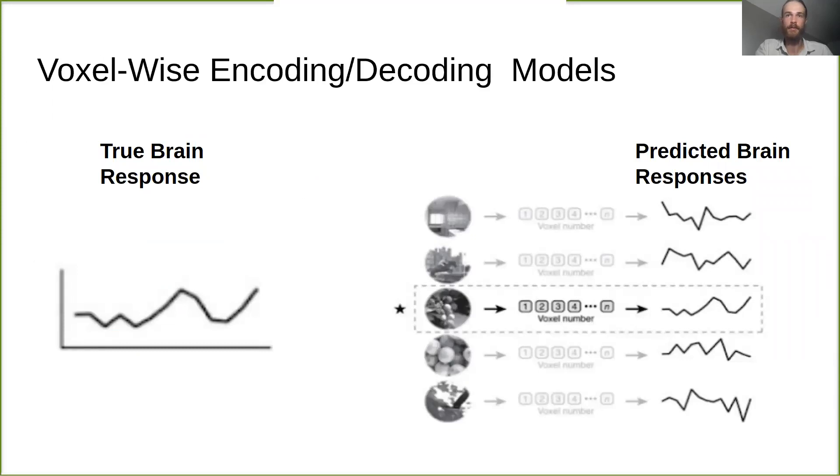Next, we used the same models to perform a type of decoding known as stimulus identification. The data provided contain voxel responses to each validation image, and as mentioned previously, our encoding model also yields predicted voxel responses to each image. By comparing each set of true responses to all of the predicted responses, we're able to infer which stimulus image most likely caused each volume of activity.